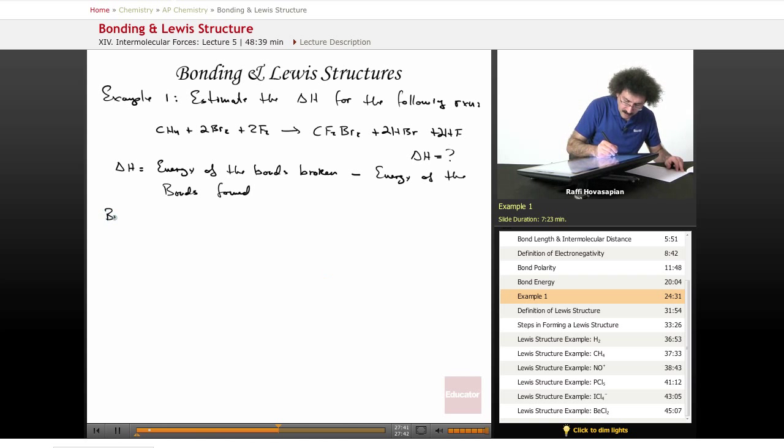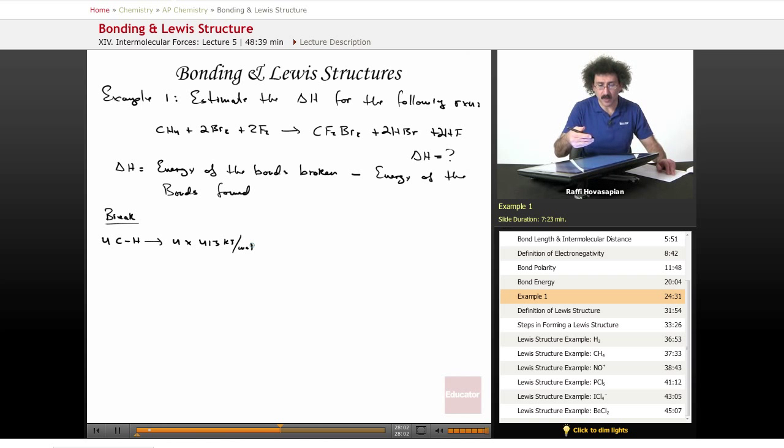Okay. So now let's take a look at the bonds that we are breaking. We're breaking four CH bonds, right? CH4. So four CH bonds. That's going to equal four times 413 kilojoules per mole. And again, these values for bond energies, they're in your book, or they're in the back of the book, or they're in a CRC table. And they're available in a list, or they're available on the web. Okay. So that equals 652 kilojoules. We're breaking two Br-Br bonds. So that's going to be two times 193 kilojoules per mole equals 386 kilojoules.